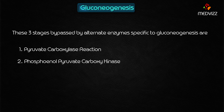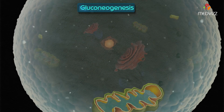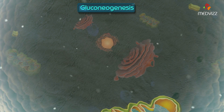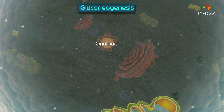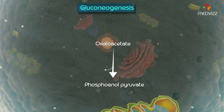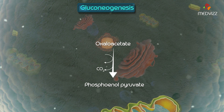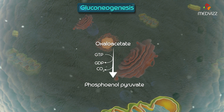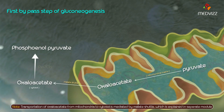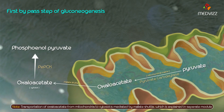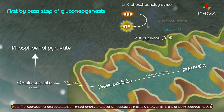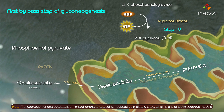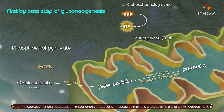The second bypass step involves phosphoenolpyruvate carboxykinase. In the cytosol, this enzyme converts oxaloacetate to phosphoenolpyruvate with the removal of a carbon dioxide molecule. GTP donates the phosphate. The net effect of these two reactions is the conversion of pyruvate to phosphoenolpyruvate, replacing the irreversible step catalyzed by pyruvate kinase, which is step 9 of glycolysis.